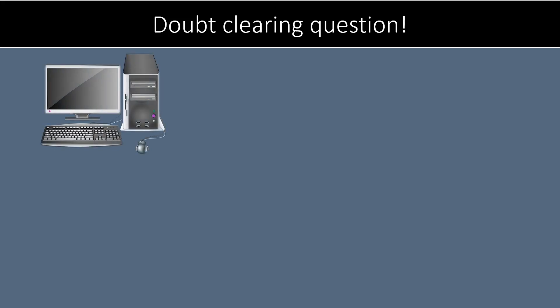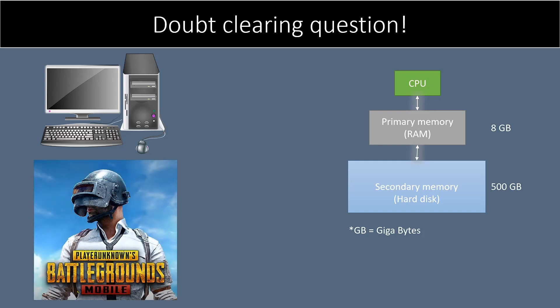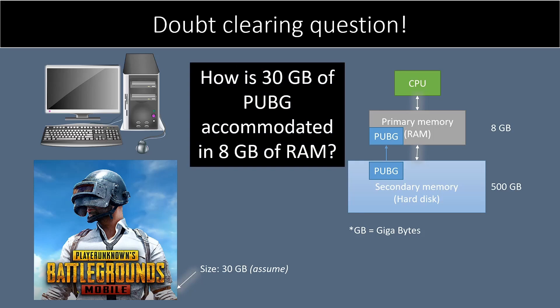Assume that you have a computer system with a RAM of 8GB and a hard disk of 500GB. GB stands for Gigabytes — it is the unit of storage. Let's say you are interested in running PUBG, the popular computer game. To install PUBG, you need at least 30GB of free storage space. To run a computer program, it must be kept in the RAM from the hard disk. So how do you think 30GB of PUBG will be accommodated in a RAM having only 8GB of space?